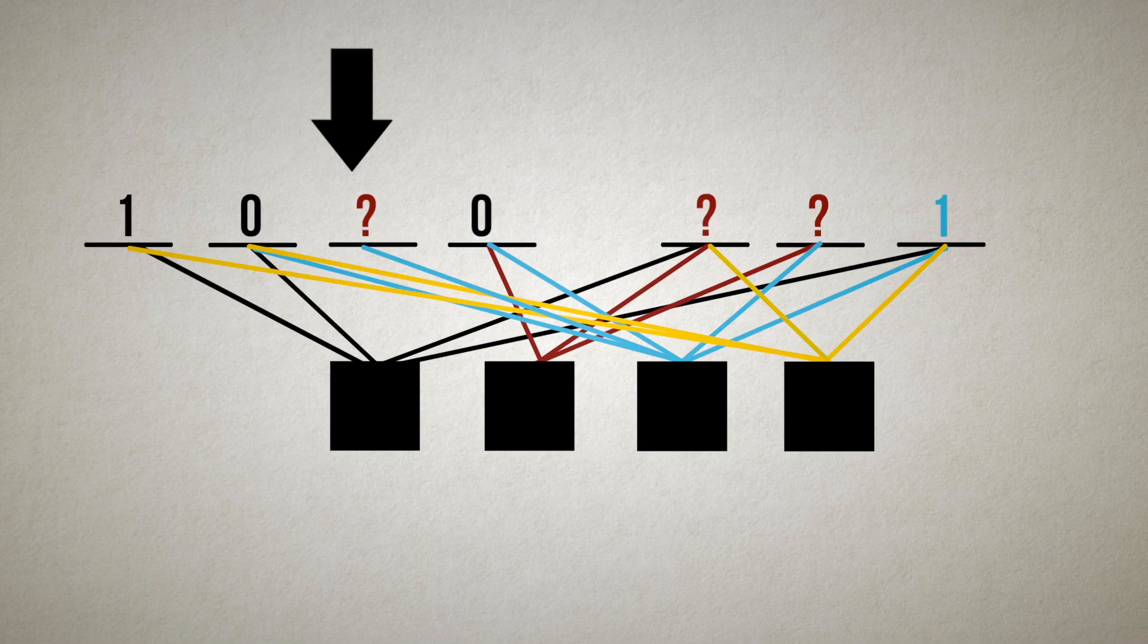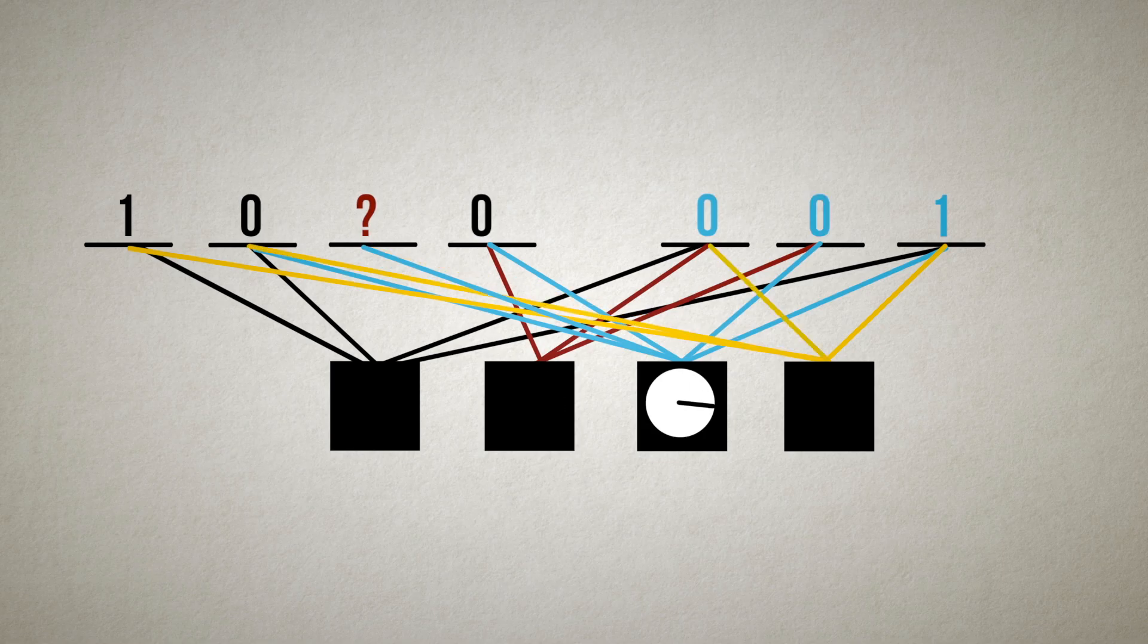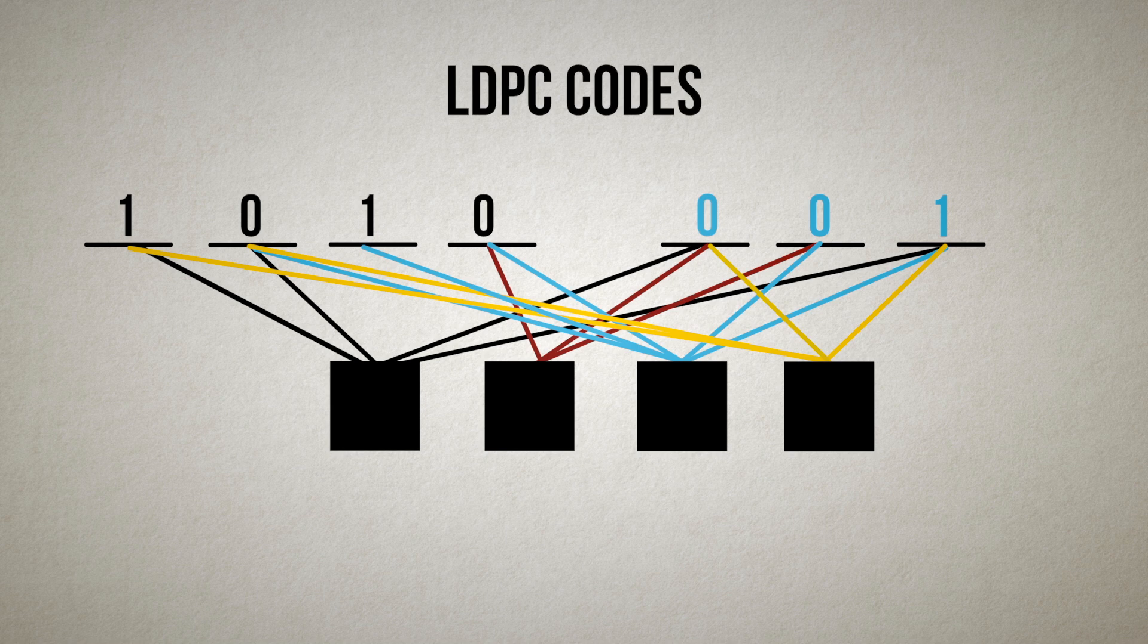That is, we make sure all bits message and parity are contained in multiple check sets. And now we have everything we need to understand the basics of low density parity check codes or LDPC codes.